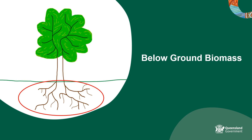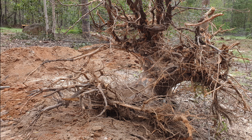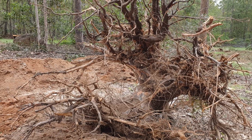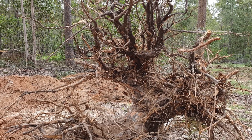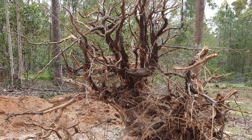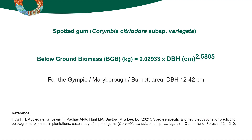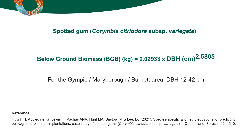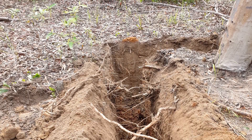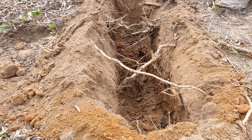Below ground biomass, or BGB, is a measure of the dry weight of the large and fine roots of trees. BGB can be calculated by species-specific equations, which as before have been developed for particular species and locations — these are most accurate to use if available. This example of an equation for BGB gives the dry weight of spotted gum roots from plantations in South East Queensland. There are many other equations that have been developed for various species in various locations, and these should be used if available.